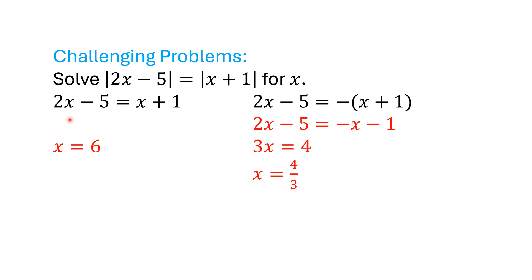So we're going to solve 2x - 5 = x + 1. And so we end up with x = 6.